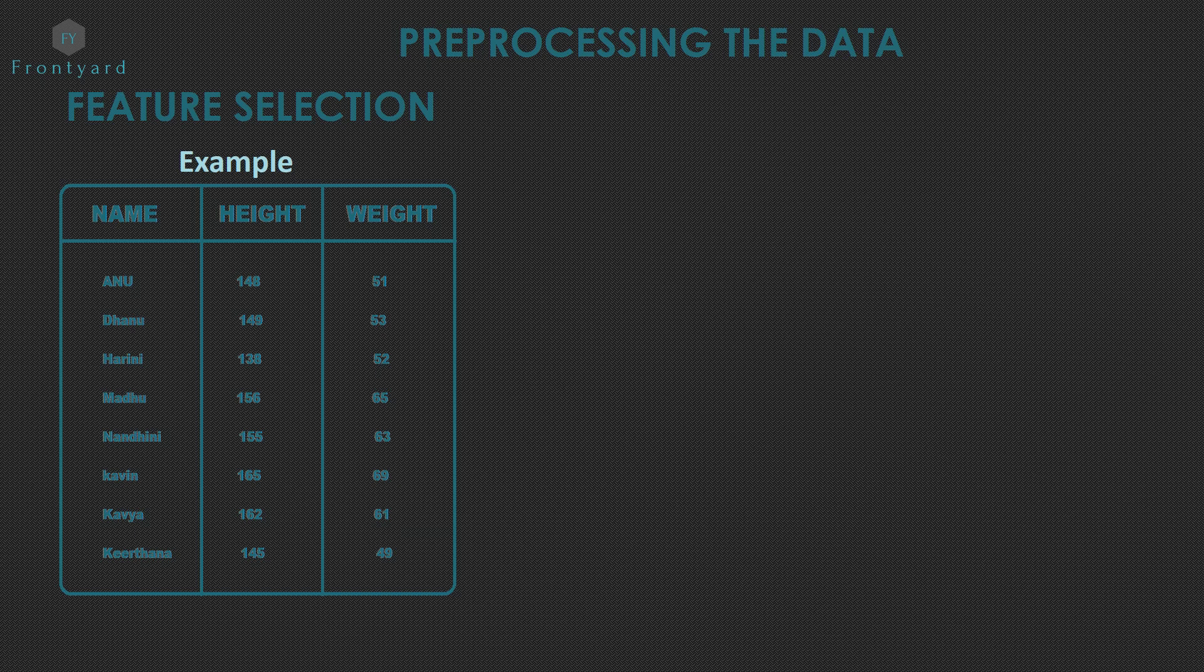Let's see an example for feature selection. Before that, if you have any doubt about what is target and what is feature and prediction variables, watch our previous video to get clear about data. Let's take an example. In this, consider weight is the target. That is, we are going to predict weight for persons. Features are name and height.